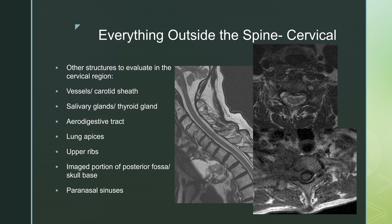E stands for everything outside the spine. In the cervical spine, you're evaluating any vessels in the carotid sheath — the carotid, the jugular, the vertebrals — and you're looking at salivary glands and the thyroid gland. Here's a thyroid gland mass seen incidentally on a C-spine. You're looking at the mucosal surfaces of the aerodigestive tract. You can see the lung apices, looking for something like a Pancoast tumor, and the upper posterior ribs, which can also tell you about a Pancoast tumor.